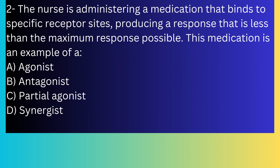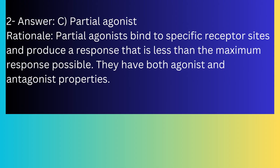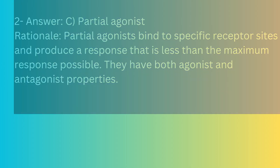Question number two: The nurse is administering a medication that binds to specific receptor sites producing a response that is less than the maximum response possible. This medication is an example of: A) Agonist, B) Antagonist, C) Partial agonist, D) Synergist. The answer is C, partial agonist. Partial agonists bind to specific receptor sites and produce a response that is less than the maximum response possible; they have both agonist and antagonist properties.